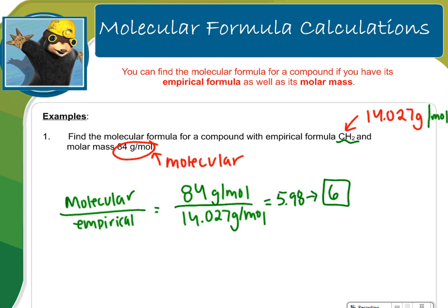So that whole number, I'm going to go back and I'm going to multiply that by the subscripts in the empirical. So I'll take the empirical, which is CH2. I'll multiply those subscripts by 6. So what I end up getting is C6H12. That is your final molecular formula. So this is your answer.